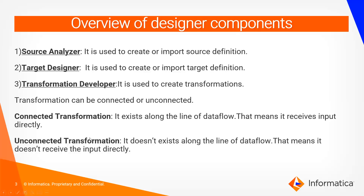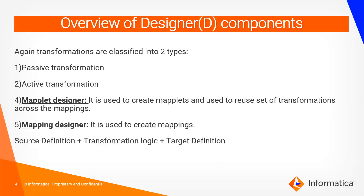A connected transformation exists along the line of data flow, meaning it receives input directly. An unconnected transformation does not exist along the line of data flow and does not receive input directly. The differences will be explained in detail later.